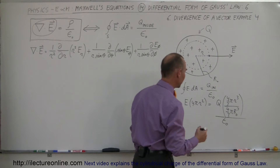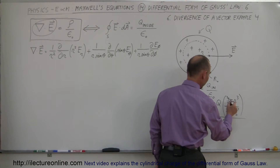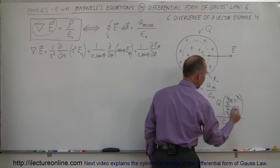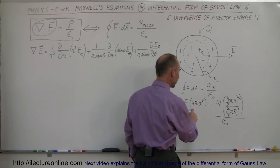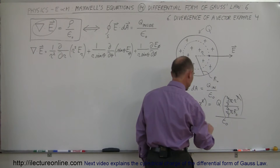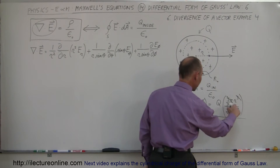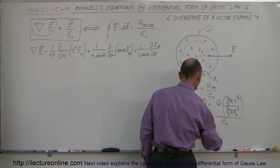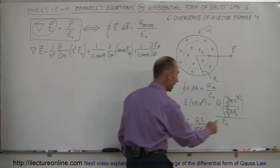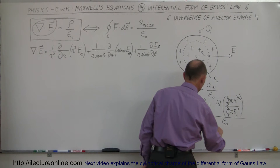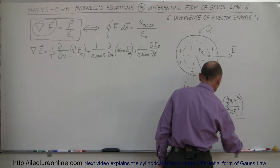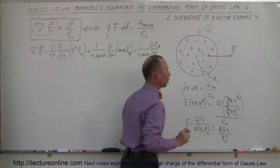We can simplify: the four-thirds pi cancels out, and the r squared on the left cancels with the r cubed, leaving just an r. So E equals Q times r in the numerator, and in the denominator we have 4 pi epsilon sub nought — which is 1 over K — times R sub nought cubed. That simplifies to E equals KQr divided by R sub nought cubed, which is the electric field strength at that location inside the sphere.